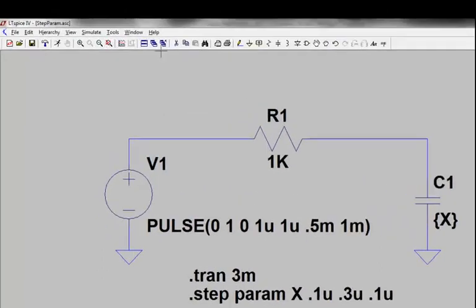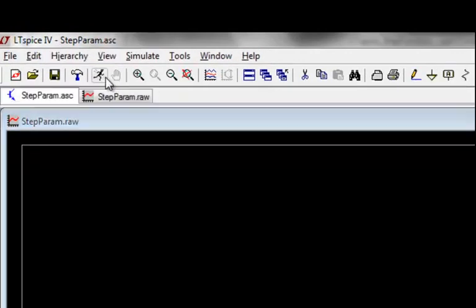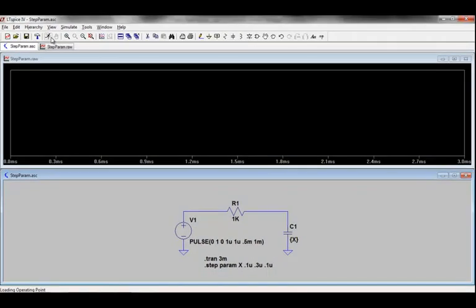The last step is to select Run from the toolbar to run your simulation. LTSpice will run a single simulation that will sweep across the range of values you have specified in the dot step command.